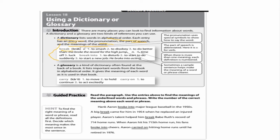The pronunciation uses special symbols to show how to say the word. Then we have the part of speech — break can be a verb or break can be a noun. When there is more than one meaning, each definition is numbered. So when we see those numbers, we know there must be more than one meaning to that word.